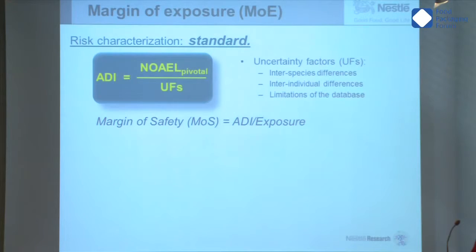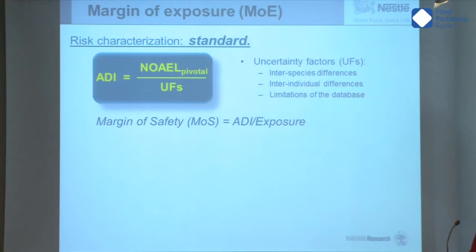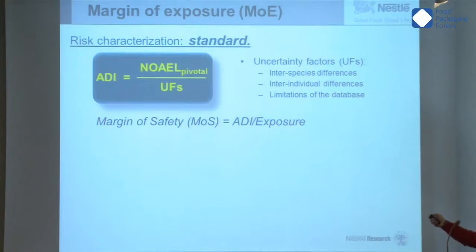I will go through the margin of exposure a bit more, because I think it's a key concept to be able to use computational and in silico toxicology. Classically, hazard characterization is done by establishing a safe level of exposure in humans — like the acceptable daily intake — which is the ratio between a safe level in animals, divided by uncertainty factors which deal with classical uncertainties like inter-species and inter-individual differences.